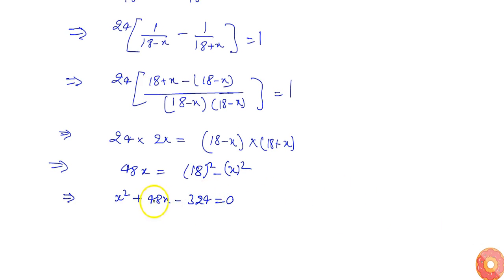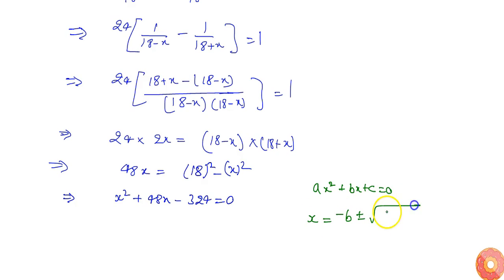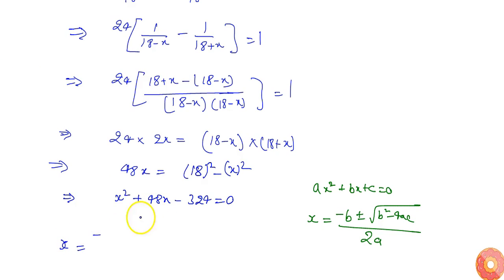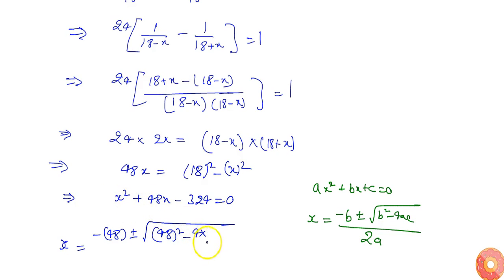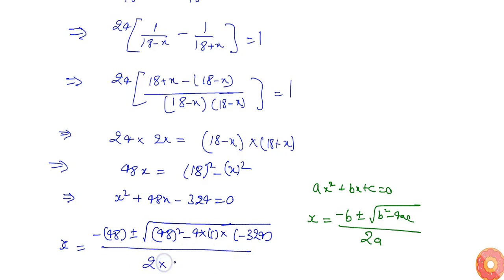Now the roots of the equation will give the speed of the stream. Using the quadratic formula — if ax² + bx + c = 0, then x equals (minus b ± √(b² − 4ac)) / 2a — here b is 48, a is 1, and c is minus 324. So x equals (minus 48 ± √(48² − 4 × 1 × (−324))) / (2 × 1).